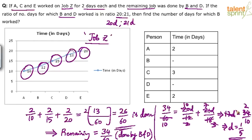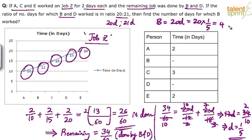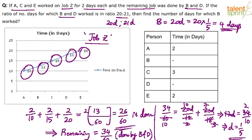Since d = 1/5, B worked for 20d = 20 × 1/5 = 4 days. That is the final answer: B worked for 4 days.